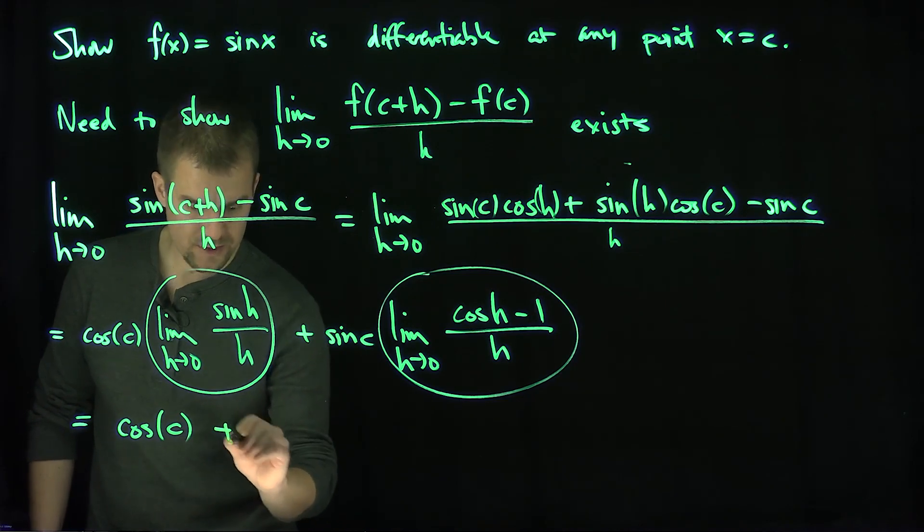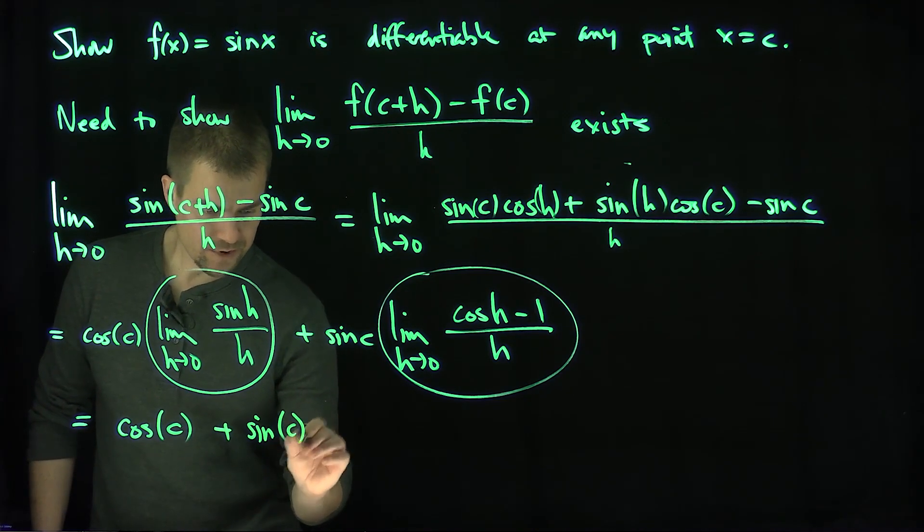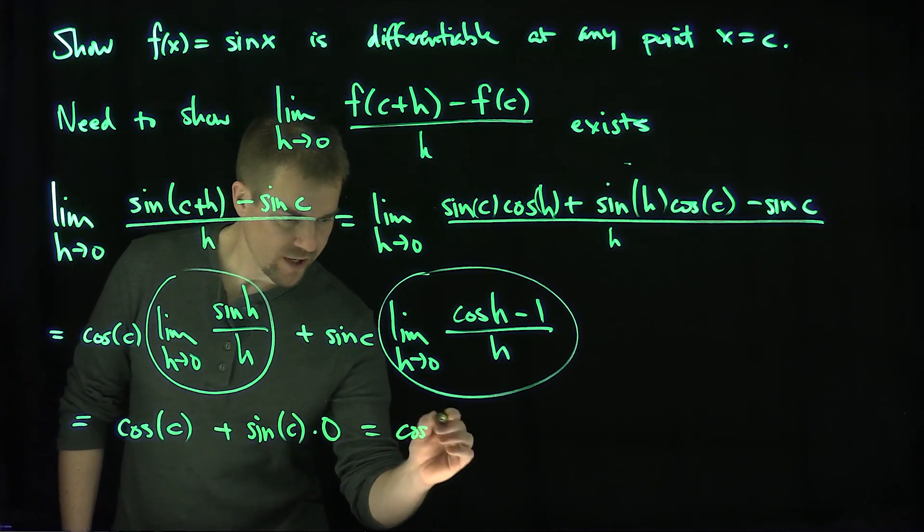So I have cosine of c plus sine of c times zero. And so we just get cosine of c.